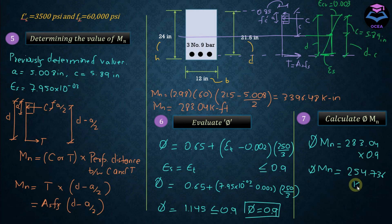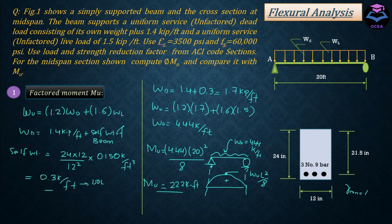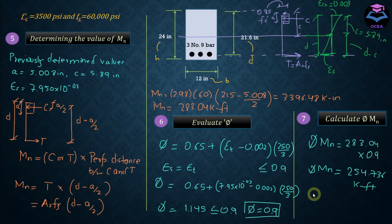And now we need to compare this phi MN with MU, that is the bending load effect acting at the midspan. And MU is equal to 222 kip-feet. If you compare them, MU is less than phi MN, it means that our section which is located in the midspan of the beam has adequate strength or satisfactory strength in flexure. It is safe in flexure.